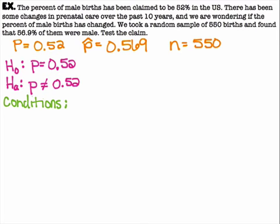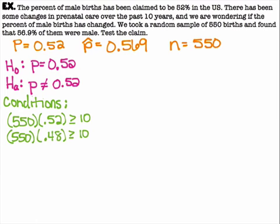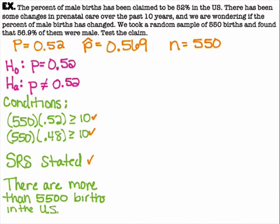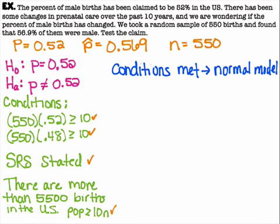Checking conditions: success-failure — 550 × 0.52 ≥ 10 and 550 × 0.48 ≥ 10, both satisfied. Randomization was stated. The 10% condition — there are more than 5,500 births in the US, so the population is greater than 10 times n. Conditions are met; this is a normal model and we perform a one proportion Z test.